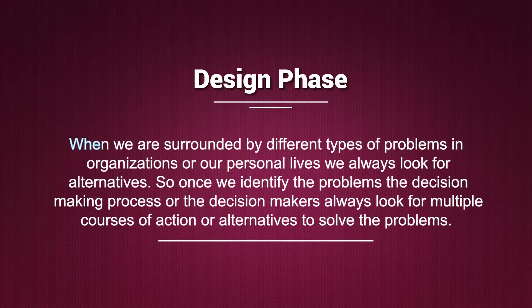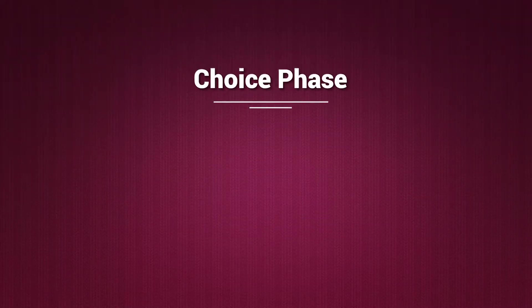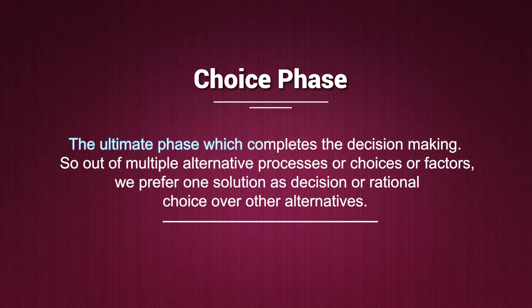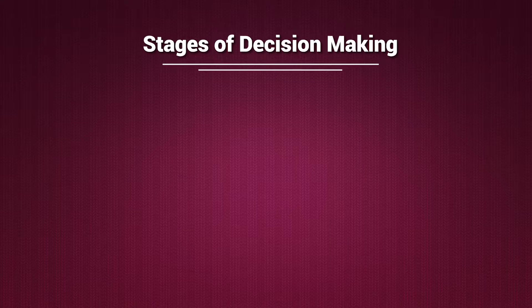What do we understand by the design phase? When we are surrounded by different types of problems in organization or our personal lives, we always look for alternatives. So once we identify the problems, the decision makers look for multiple courses of actions or alternatives to solve them. And lastly, the choice phase is the ultimate phase which completes the decision making — out of multiple alternatives we prefer one solution as the rational choice over other alternatives.